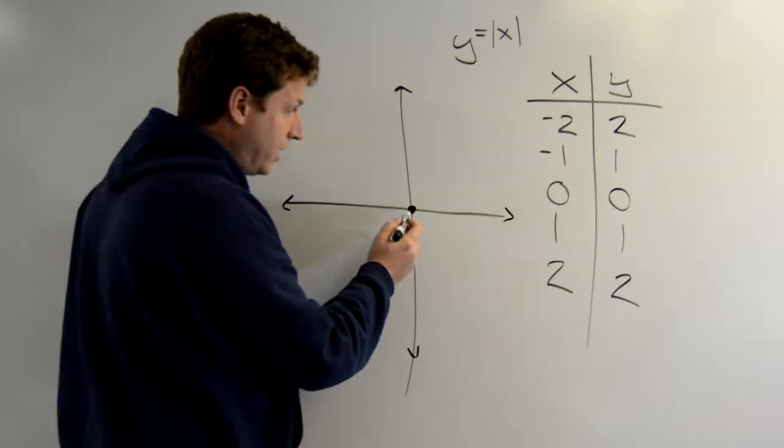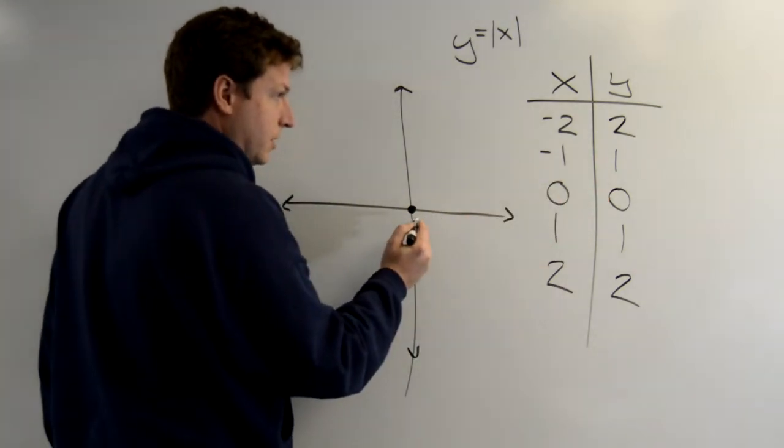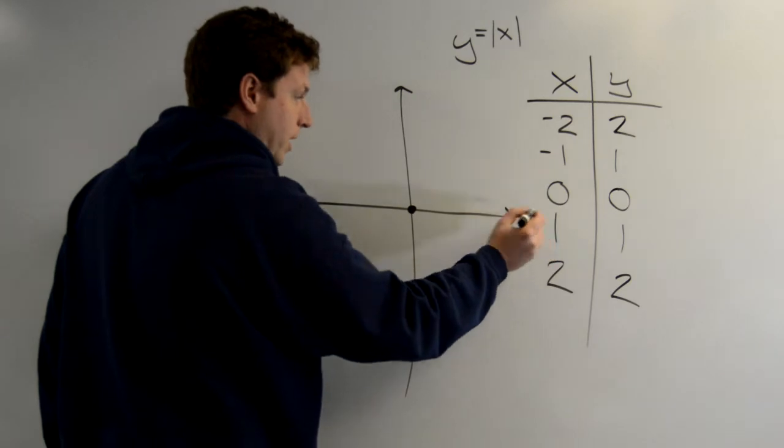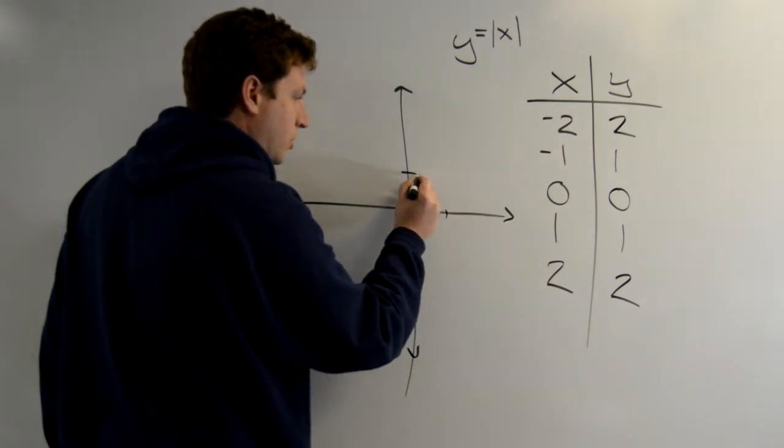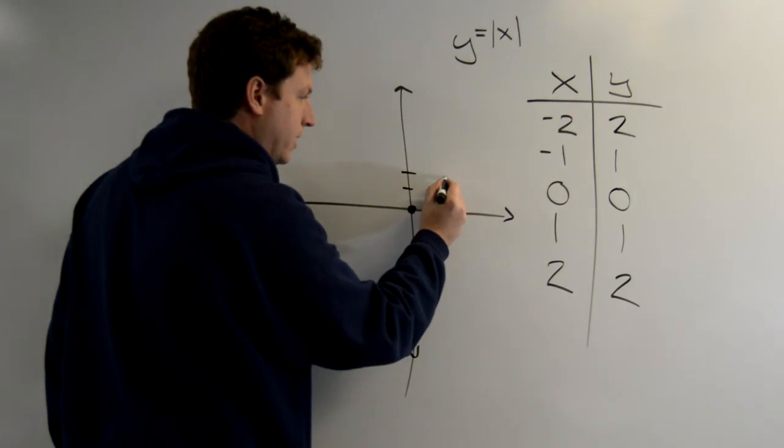This is my starting point. This is 0, 0. The next point on my graph is where x equals 1, y equals 1. Where x equals 2, y equals 2.